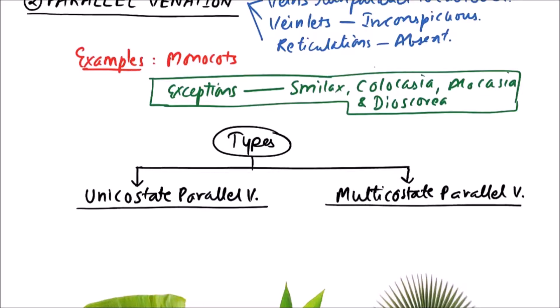In unicostate parallel venation, the number of principal veins is one, while here, more than or equal to two, that is two or more than two principal veins arise from the petiole.